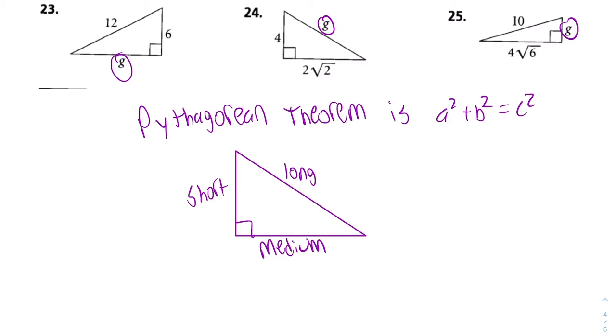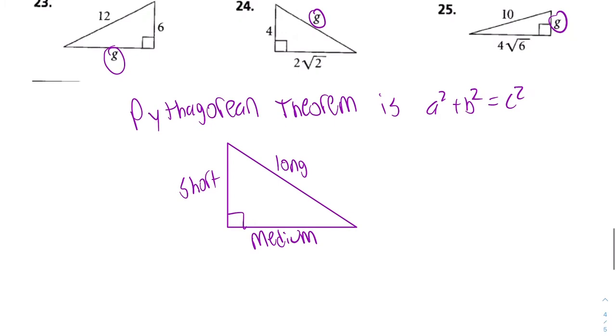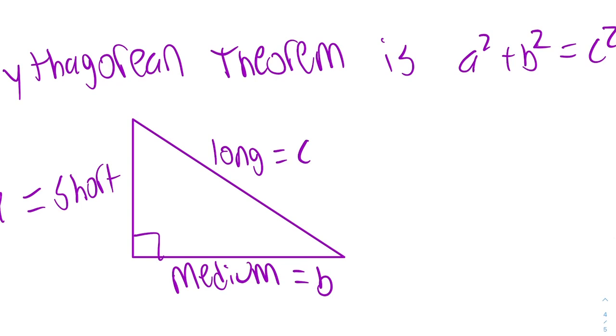A triangle always has two sides that are shorter than the third side unless it's an equilateral triangle. In using the Pythagorean theorem, it doesn't matter which of the two shorter sides are which variable. One of these shorter sides needs to be the letter A and the other shorter side needs to be the letter B. The side that is the longest is called C.